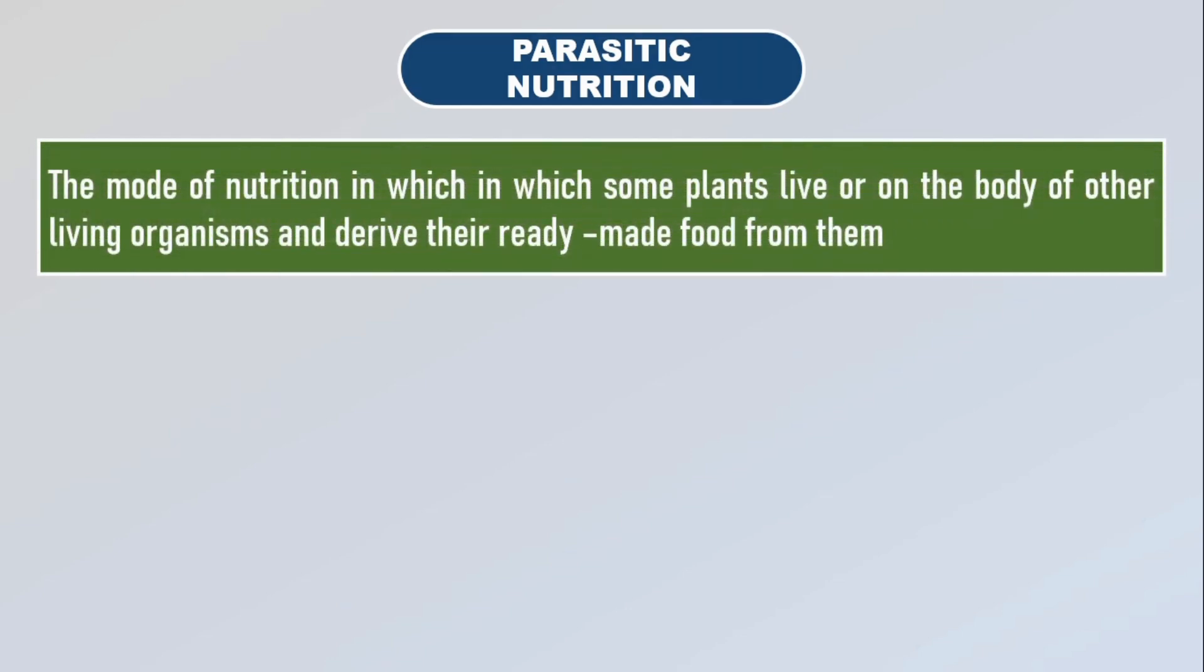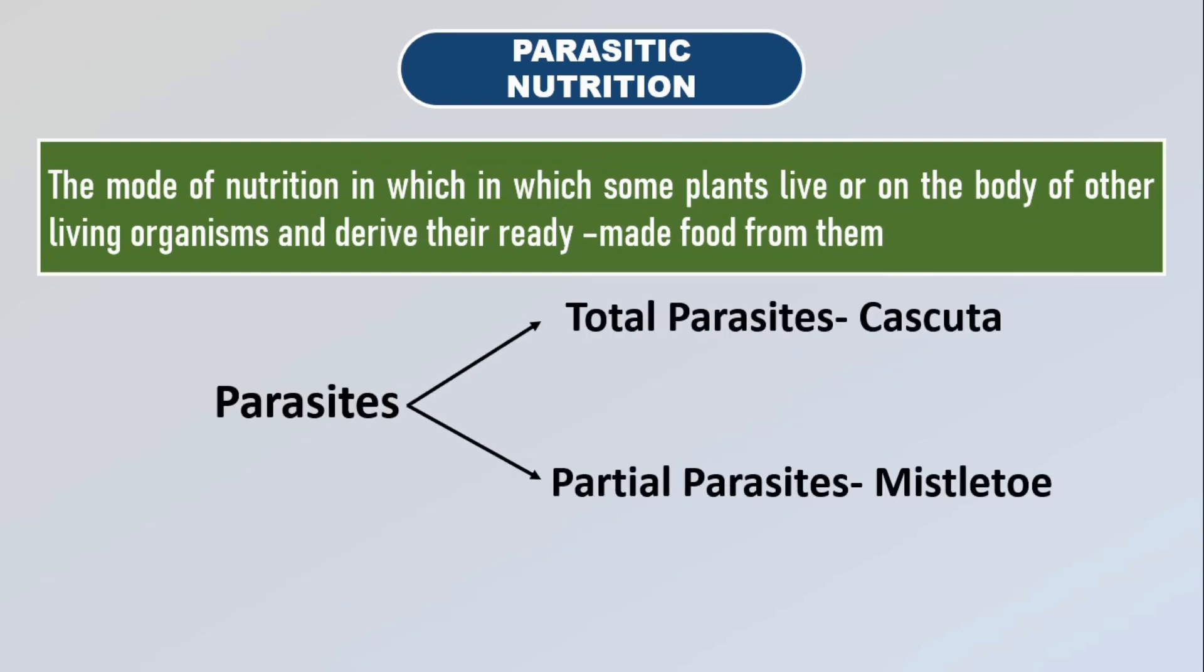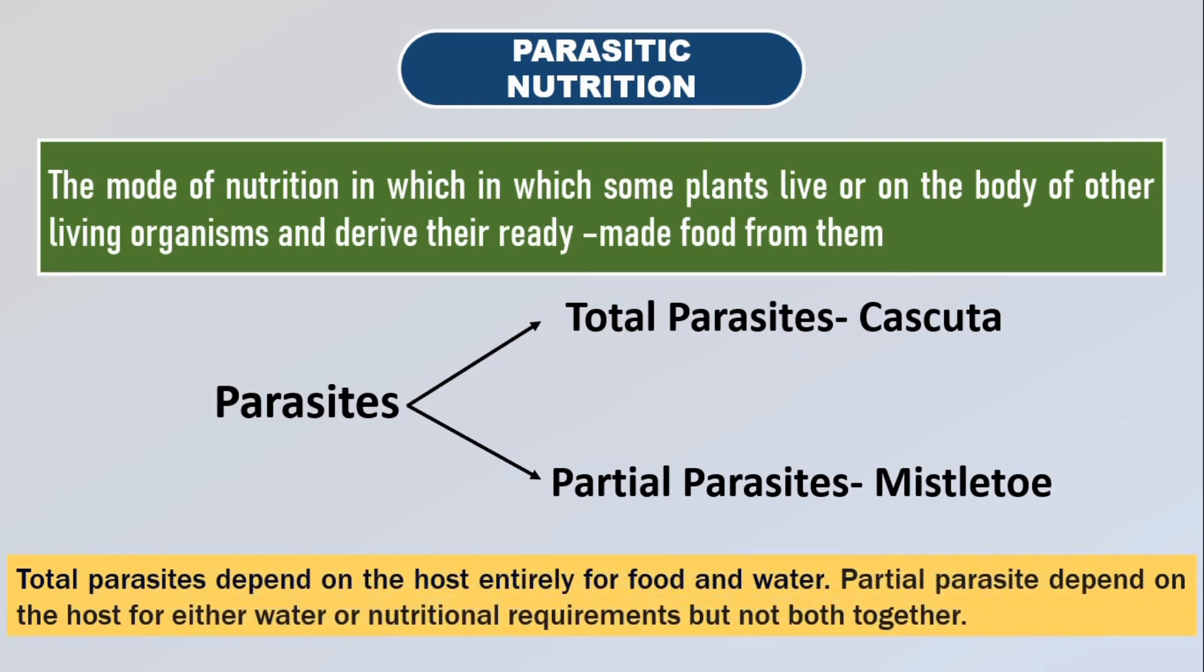Parasitic nutrition is the mode in which some plants live in or on the body of other living organisms and derive their ready-made food from them. These parasites are divided into total parasites or partial parasites. Cuscuta is a total parasite and mistletoe is an example of partial parasite. Total parasites depend on the host entirely for food and water while partial parasites depend on the host for either water or nutritional requirement but not both together.